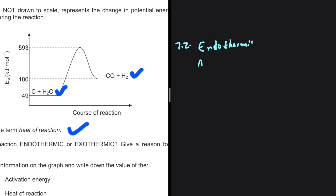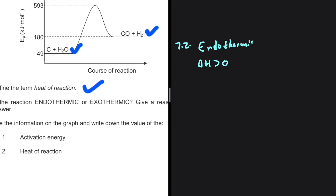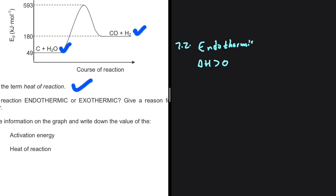So the answer to 7.2 is endothermic. We are supposed to give a reason to support our statement. We can say that delta H is greater than zero, or if you want to be more detailed, you can say that more energy is absorbed than released.